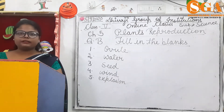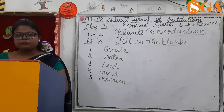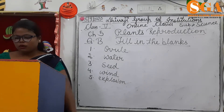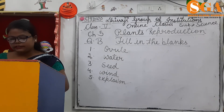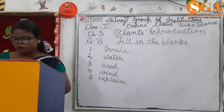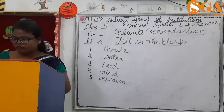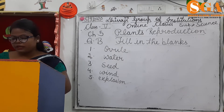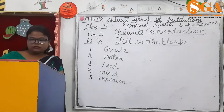I am going to repeat this fill in the blanks. First: female gamete is present inside the ovule. Second: coconut is dispersed by water. Third: the ovule develops into seeds. Fourth: wing and hair are found in seeds dispersed by wind. Fifth: seeds of pea and poppy get dispersed by explosion.